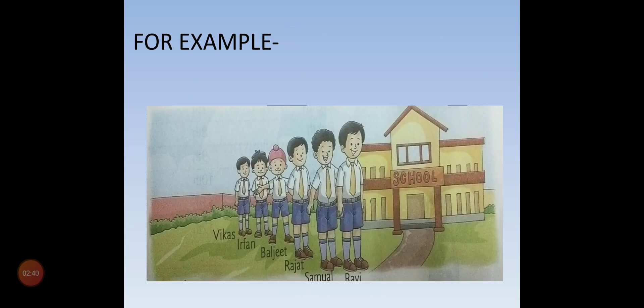For example, now suppose 6 boys are standing in a queue in the school. We say that Ravi is the first boy in the queue, Samuel is the second, Rajat is the third, Baljeet is the fourth, Irfan is the fifth, Vikas is the sixth in the queue.